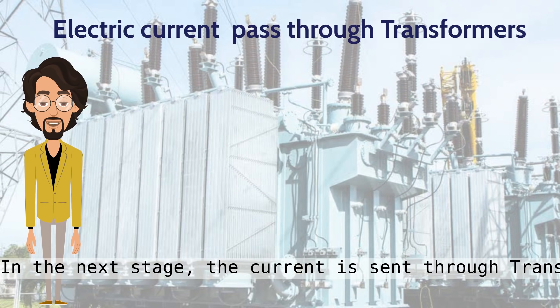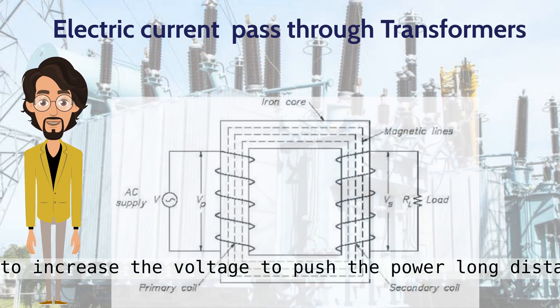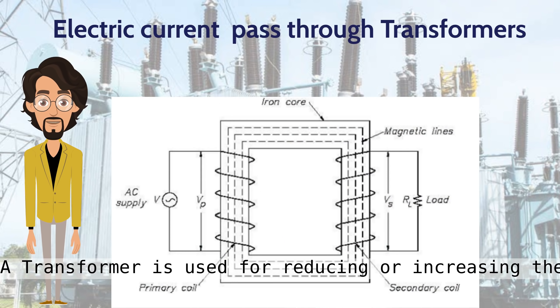In the next stage, the current is sent through transformers to increase the voltage to push the power long distances. A transformer is used for reducing or increasing the voltage of an alternating current.